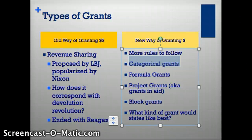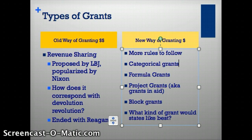Categorical grants can only be used for specific items or categories of state and local government. Generally, they come with a lot of strings attached — a lot of rules. In some cases, the state could even be required to contribute money. Just like if your mom gave you $200 at the beginning of school and said you need to spend it on binders, pencils, pens, socks, underwear, two shirts, three pairs of pants, a pair of shoes — and those shoes cannot exceed the cost of $50. Categorical grants: lots of strings attached.